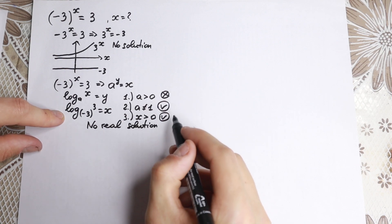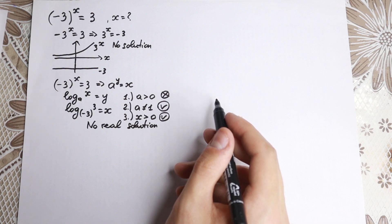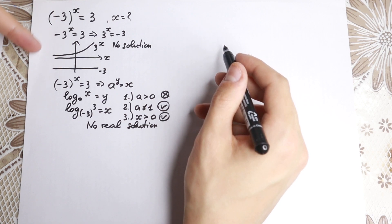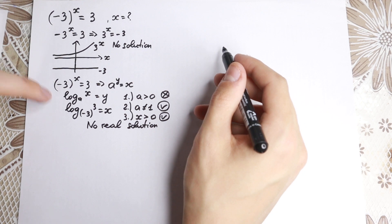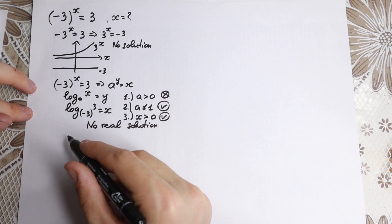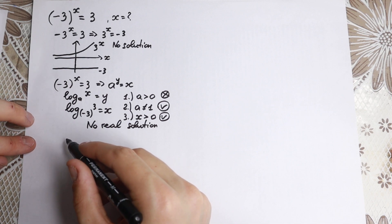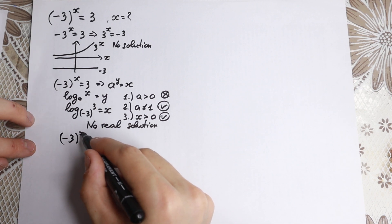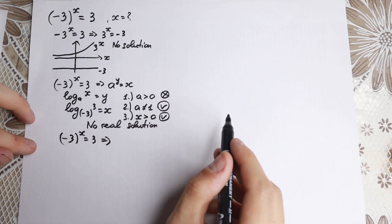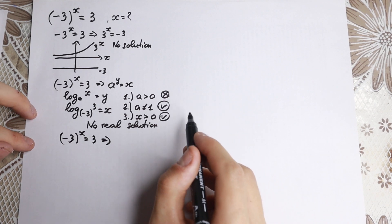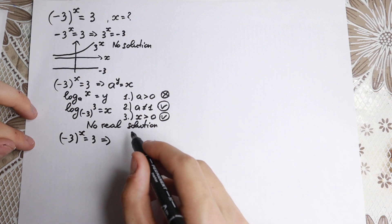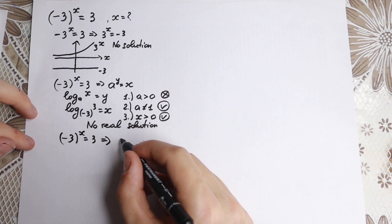A lot of students ask: what about complex roots? We don't have a real solution in this case — not without parentheses and not with parentheses. But what about complex solutions? Let's try to find them. So we have minus 3 to the power x equals 3. The trick is: we can write the minus as i squared, since i squared equals minus 1 in complex numbers.